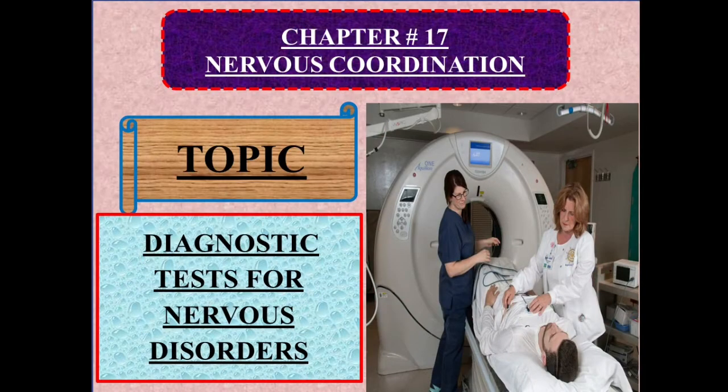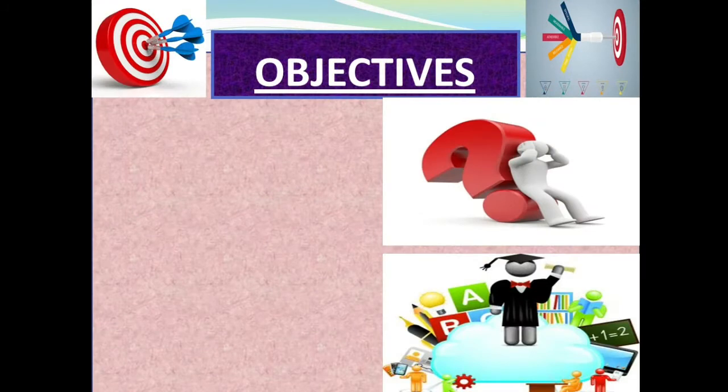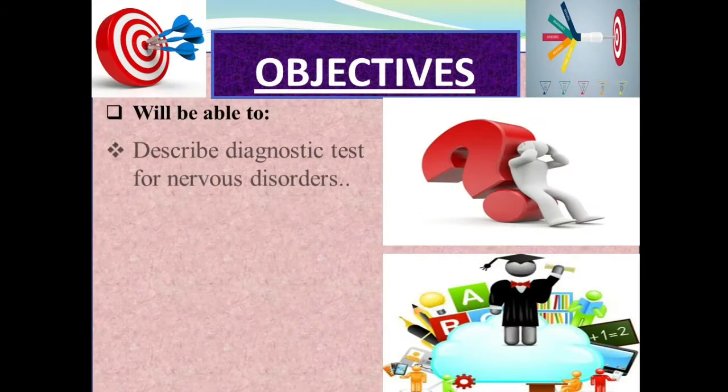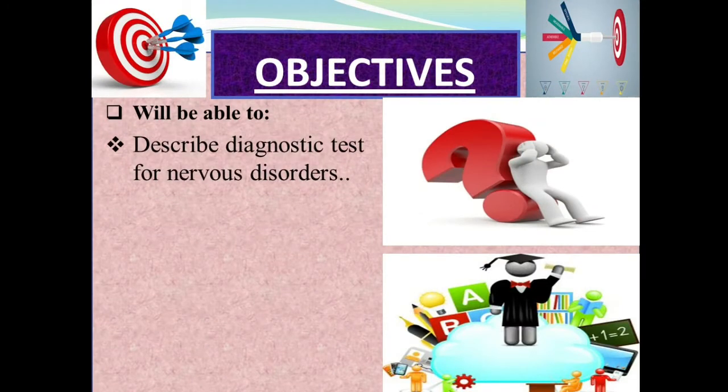Dear students, our Chapter Number 17, Nervous Coordination, is continued. The topic which we are going to study today is Diagnostic Tests for Nervous Disorders, and this is the last topic of this chapter taken from Class 2nd Year. Before starting our topic, let's look at the objectives of today.